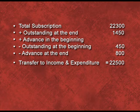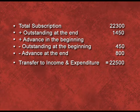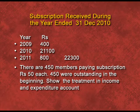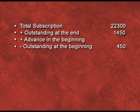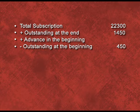Now let us discuss the solution. Total subscription received during the year is rupees 22300, including the previous year as well as the next year. We apply the formula: add outstanding at the end, add advance at the beginning, and deduct outstanding at the beginning and advance at the end. The advance at the end — in 2011 we have rupees 800 received in 2010, so if we are receiving the amount of 2011 in 2010, then it is advance at the end, so we deduct this amount. Then outstanding at the beginning — rupees 450 were outstanding at the beginning, so we deduct this amount, as it does not belong to the current year.